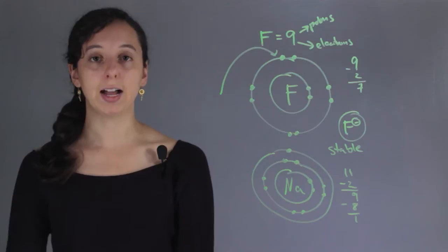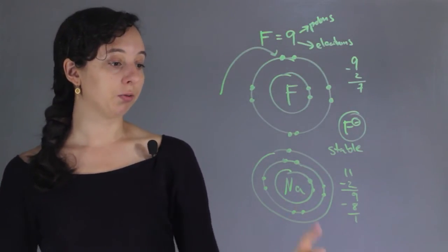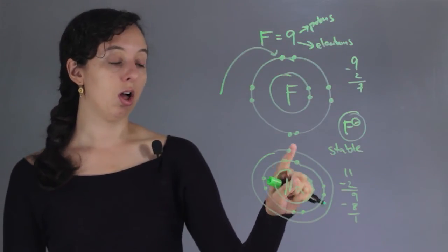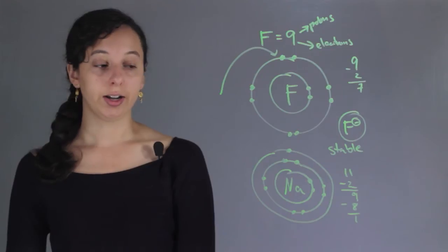Remember, every element wants to have a full octet, full valence shell. And sodium is really far away from this goal on its third shell. So it doesn't want to get another electron. In fact, sodium wants to do the opposite.